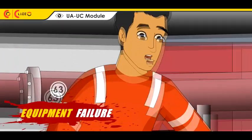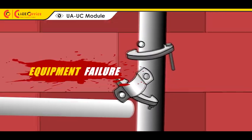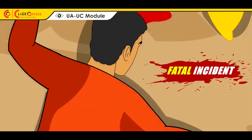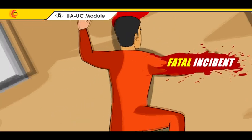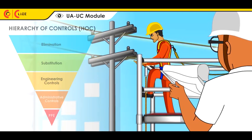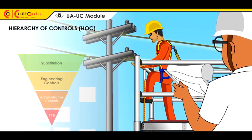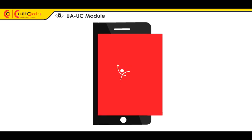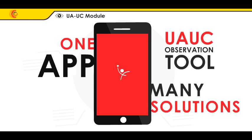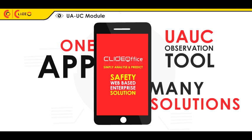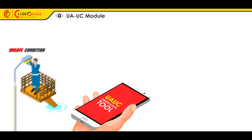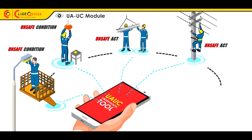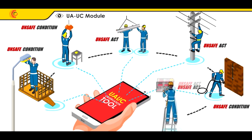The solution to this bigger problem, which can affect the safety culture, is to have a strong observation process. Clyde Office, an amazing UAUC observation tool, helps you capture every unsafe act or condition from mobile in no time.